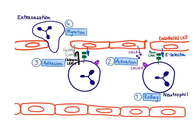A way to remember this: the E in E-selectin stands for endothelial cells, so you know this molecule is expressed on the endothelial cell. It's the endothelial cell that selects who is going to extravasate. And how do you want to appear when you want to be selected? Well, mucin CAM is a very highly glycosylated protein — very sugary, very sweet. So you want to be sweet if you want to be selected. This helps you remember the interaction between E-selectin and mucin CAM, this loose interaction that facilitates rolling.